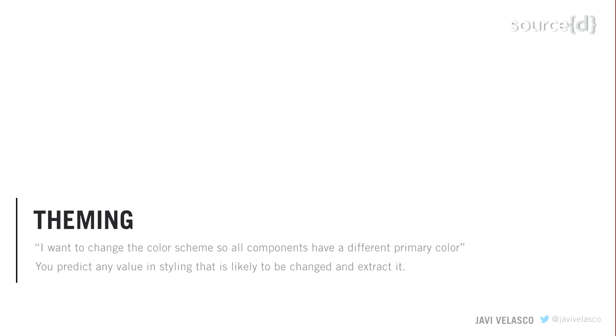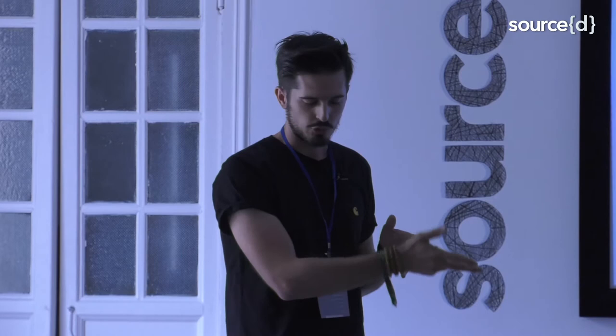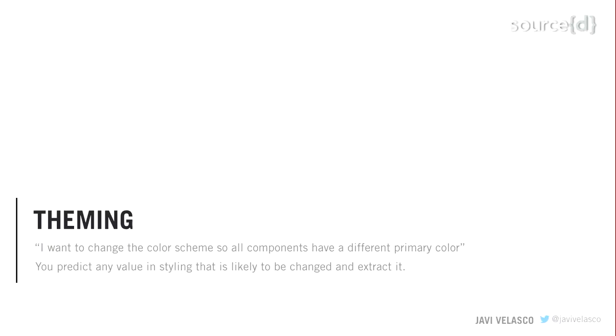First, there's theming. I call it theming when you want to change something like the color scheme — every component shares the same primary color, for example. That's something very likely to be changed, and it's easy to identify what variables you want to change. You can define an API to change just a single value and get a different flavor for all your components. That's something predictable — you can extract it into an API. That's what I call theming.